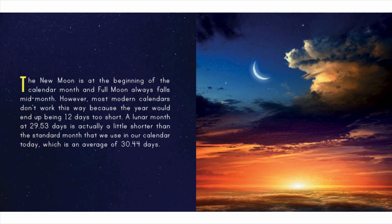The Muslim as well as the Hebrew and Chinese calendars are all set up this way. The new moon is at the beginning of the calendar month and the full moon always falls mid-month. However, most modern calendars don't work this way because the year would end up being 12 days too short. A lunar month at 29.53 days is actually a little shorter than the standard month we use today, which averages 30.44 days.